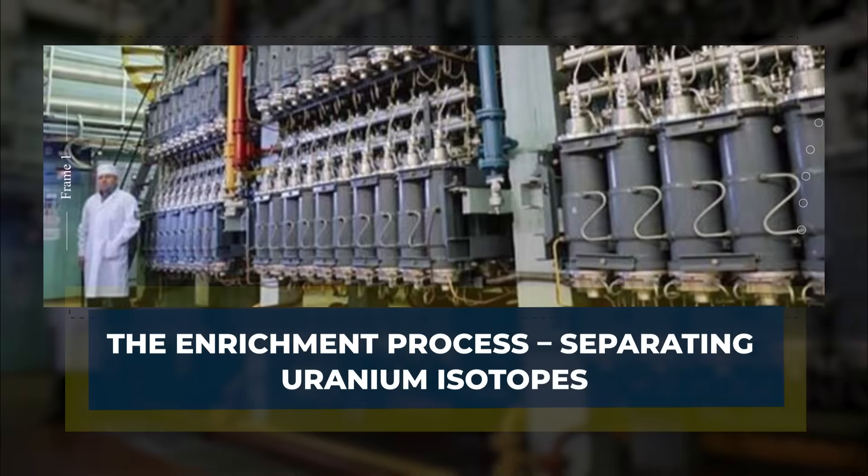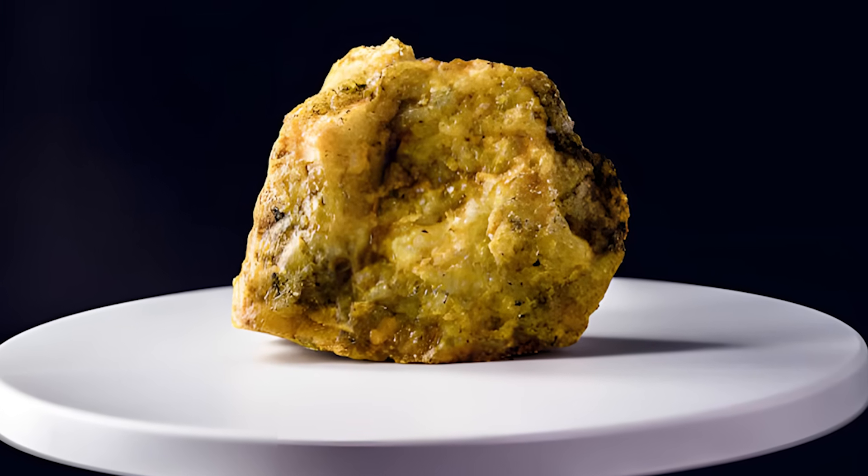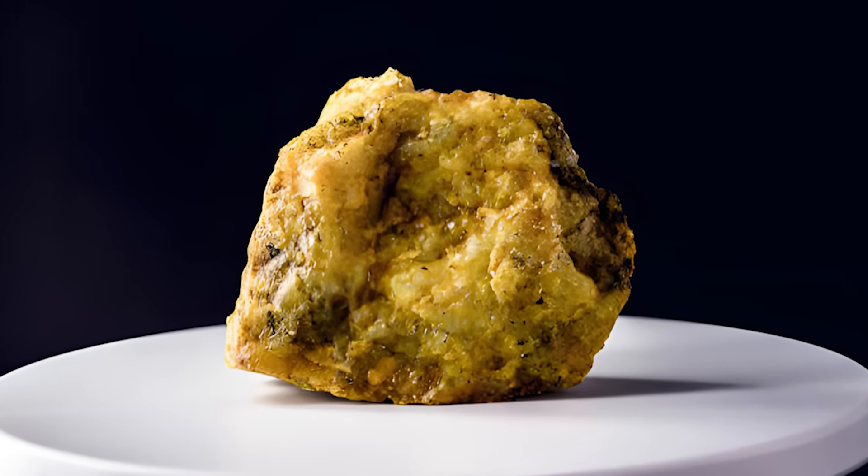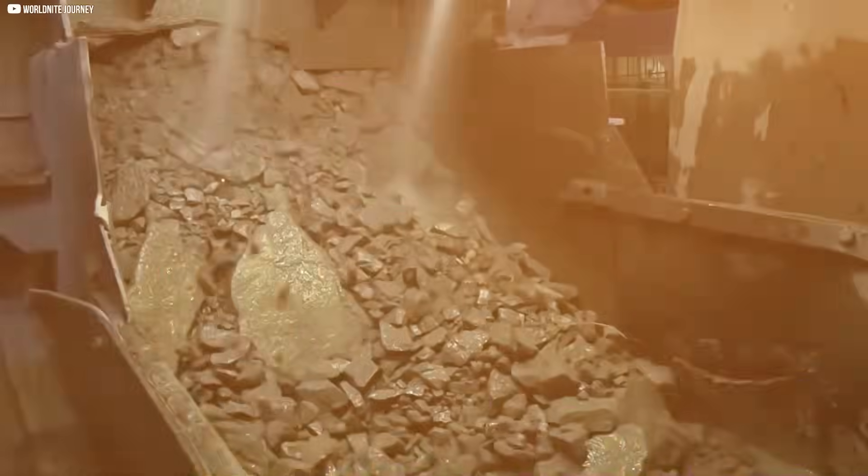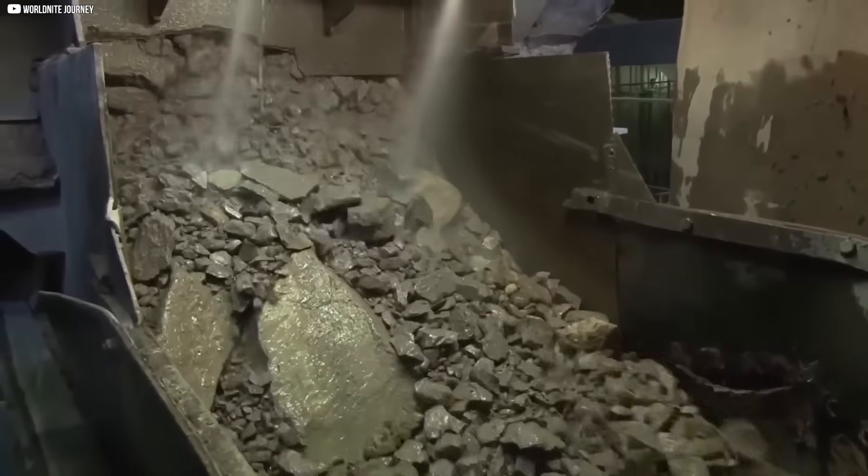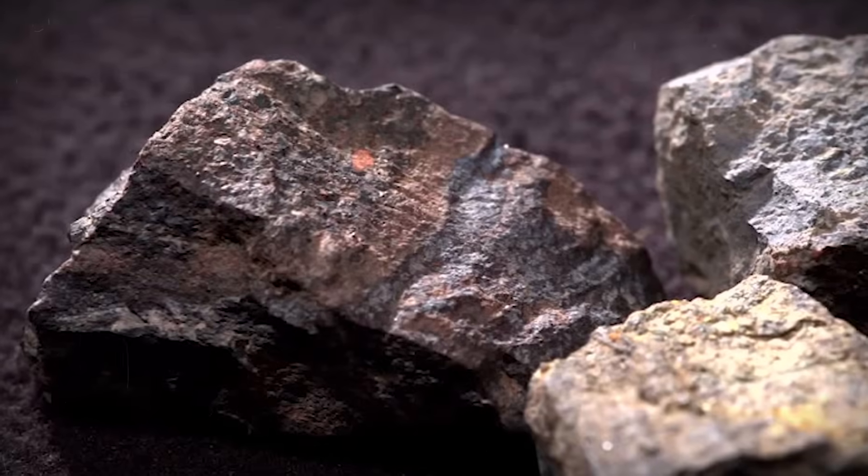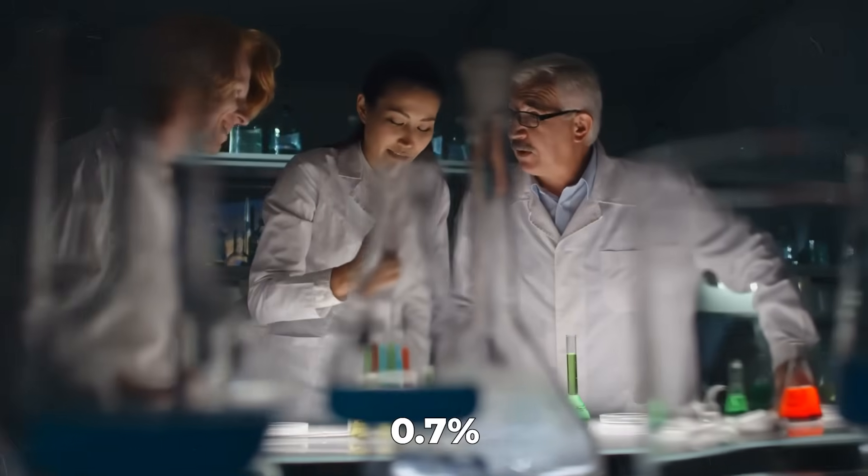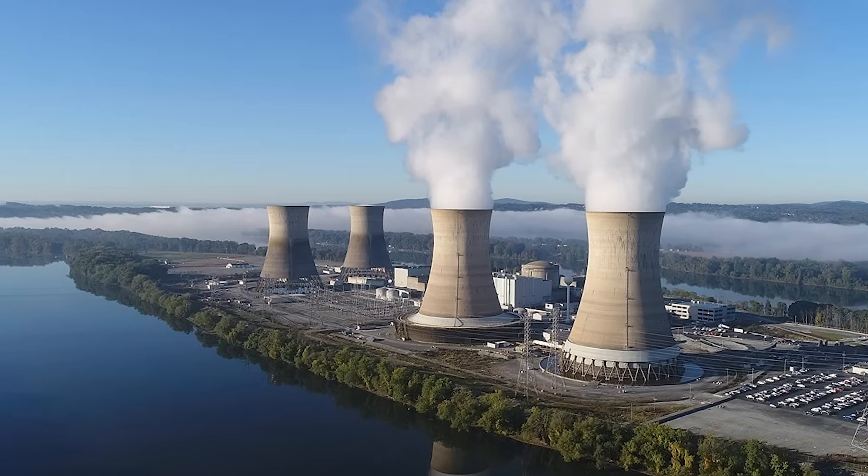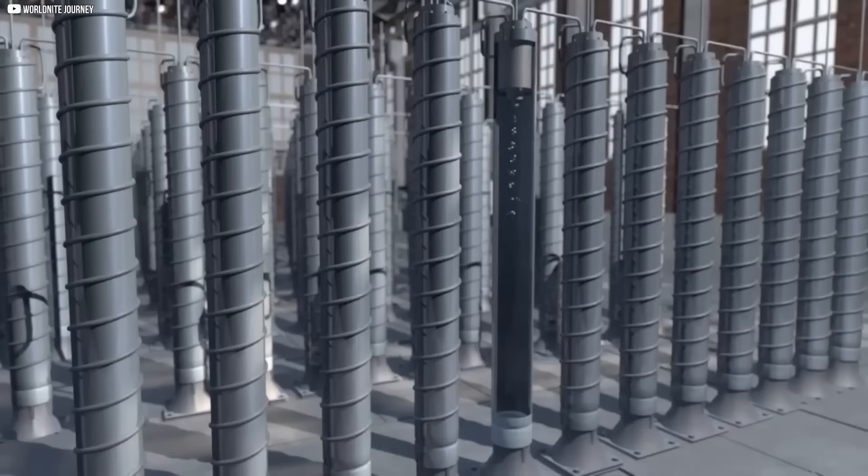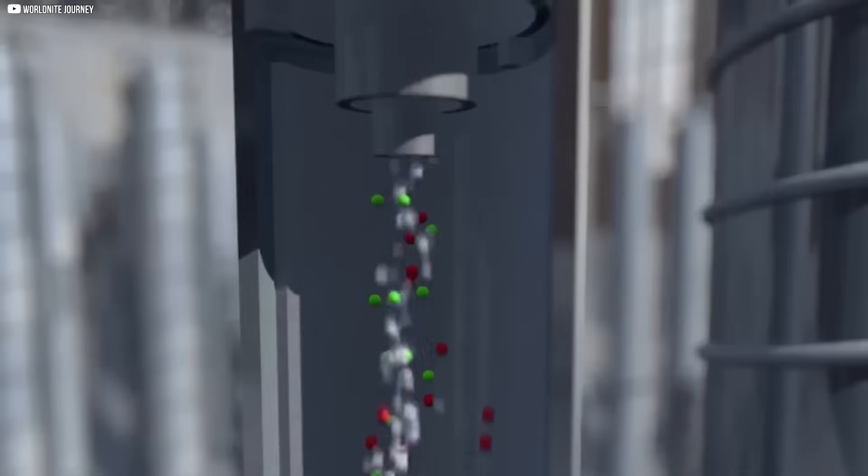The enrichment process: separating uranium isotopes. The enrichment of uranium is a critical step that makes uranium-235, the isotope needed for nuclear fission, more concentrated. Natural uranium consists of about 99.3% uranium-238, which is not easily usable for fission, and only 0.7% uranium-235. To make uranium suitable for nuclear reactors or weapons, the proportion of uranium-235 must be increased through the process of enrichment.